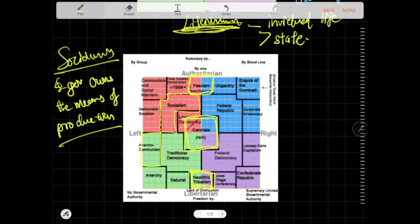Anarcho-communism, I'm not sure how that works. I've heard of anarcho-capitalism. Anarchy basically means no government, no government at all. Naturalists, traditional democracy is somewhere here. Federal democracy, federal republic. Communism and social Marxism. Oligarchy, when only a few people basically command the whole country. Empire of the Illuminati.